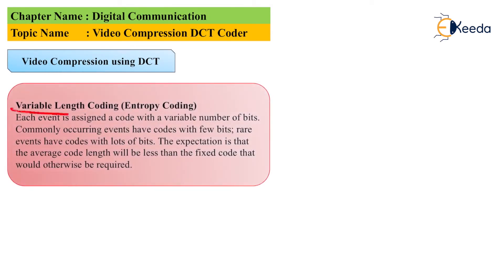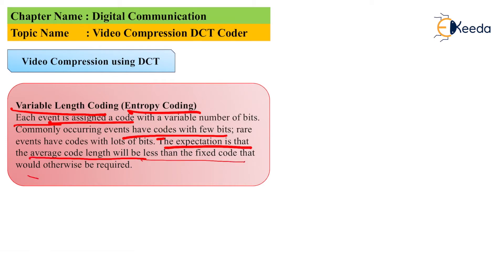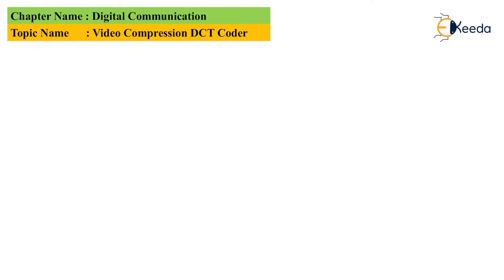The third step is variable length coding, also called entropy coding. A code is assigned to each event, and that code has a variable number of bits. Commonly occurring events have codes with fewer bits, while rare events have codes with a larger number of bits. The expectation is that the average code length will be less than a fixed code length. Codes are assigned to each event depending upon the various number of bits.